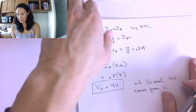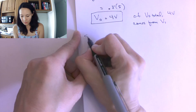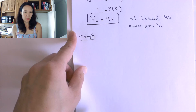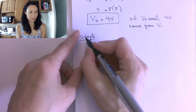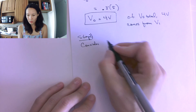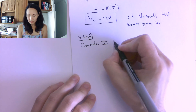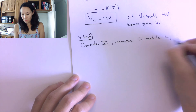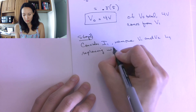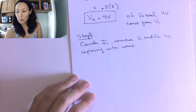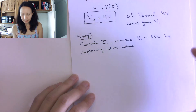Now we're going to continue by putting in another source. For step two, we're going to put back the I1 source and remove V1 and V2 by replacing them with short circuits — that's the rule for removing voltage sources in superposition. So for step two, let's consider the circuit with only I1 in.